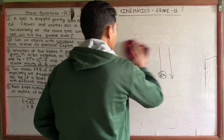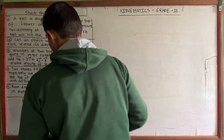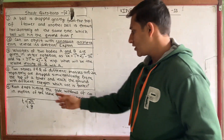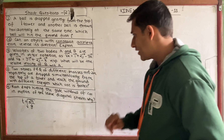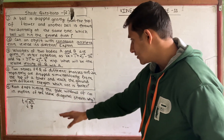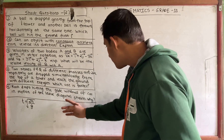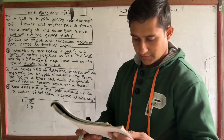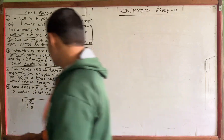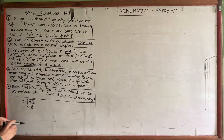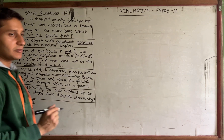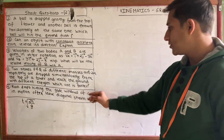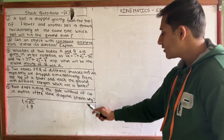Question number five: Raindrops hitting the side windows of a car in motion leave diagonal streaks. Why do raindrops hit the side windows diagonally when the car is in motion?